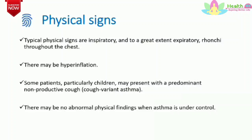Physical signs of asthma. Typical physical signs are inspiratory and, to a great extent, expiratory rhonchi throughout the chest. There may be hyperinflation. Some patients, particularly children, may present with a predominant non-productive cough, known as cough variant asthma. There may be no abnormal physical findings when asthma is under control.